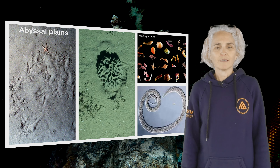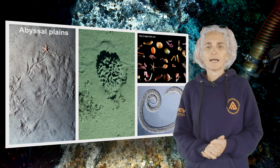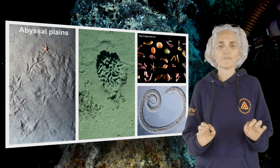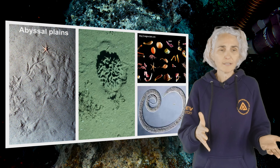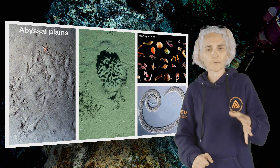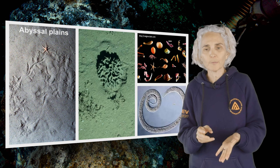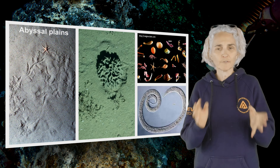Abyssal plains are the largest habitat in the deep sea, covering 75% of the seafloor — vast expanses of very fine sediment. Diving over an abyssal plain in a submersible, you would feel like you're in a desert, occasionally seeing animals like asteroids or holothurians feeding on accumulated organic matter. However, a sediment sample under a microscope reveals amazing biodiversity — one of the richest on Earth — mostly small meiofauna including nematodes, foraminifera, and small macrofauna like crustaceans and mollusks.